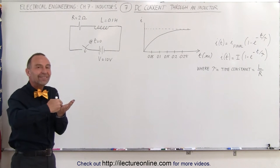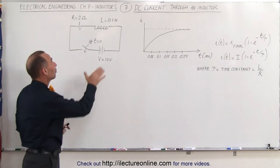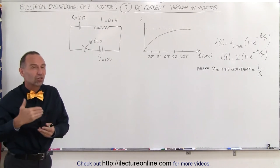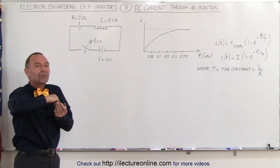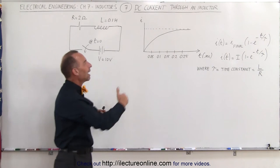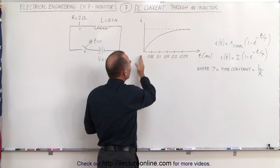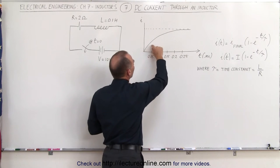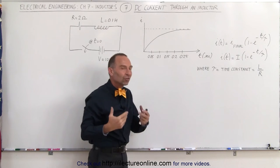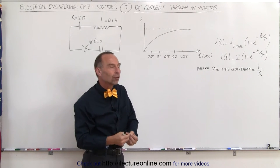When the switch closes, the current doesn't instantaneously go to its final value. The reason for that is because we have an inductor in the circuit that opposes a change in the current, so it takes a while for the current to build up to its final value. Here we have a graph that indicates that — as soon as the switch is closed at T equals 0, it takes a while for the current to reach its final value, and that depends on the time constant of the circuit.